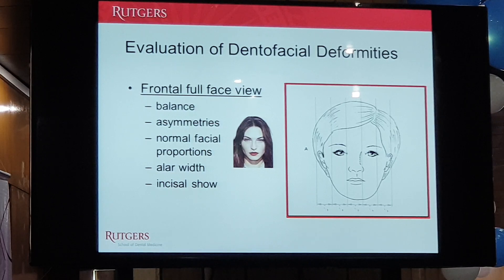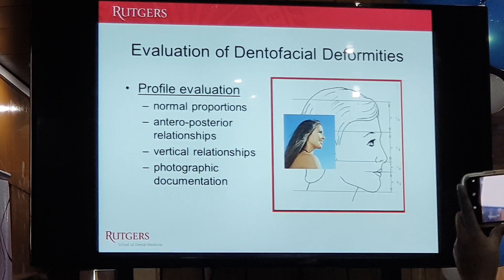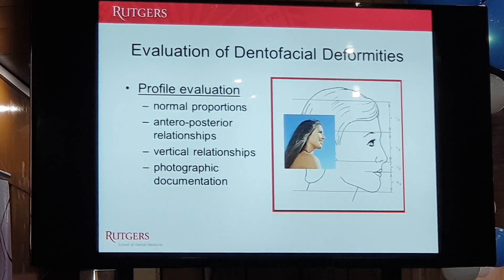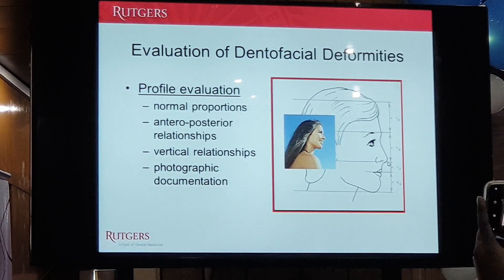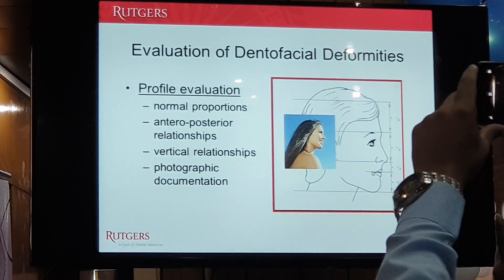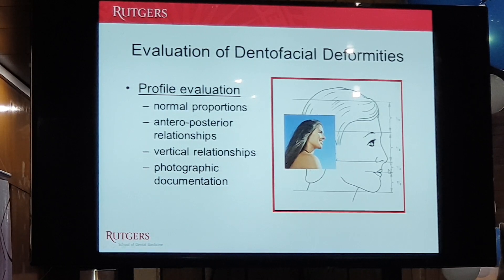You can divide the face into vertical fifths, which should be even, and from a profile standpoint into even thirds. What we're looking for when we look at the patient is balance. From a maxillofacial and orthognathic standpoint, the most important thing is the bottom facial third. The bottom third is broken into two parts: from the alar base to the commissure is one third, and twice that distance is from the commissure to the chin. That's what we're looking for in an ideal world.